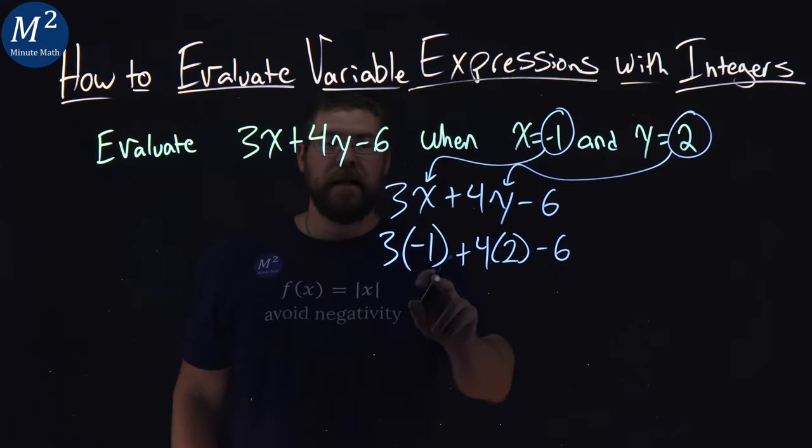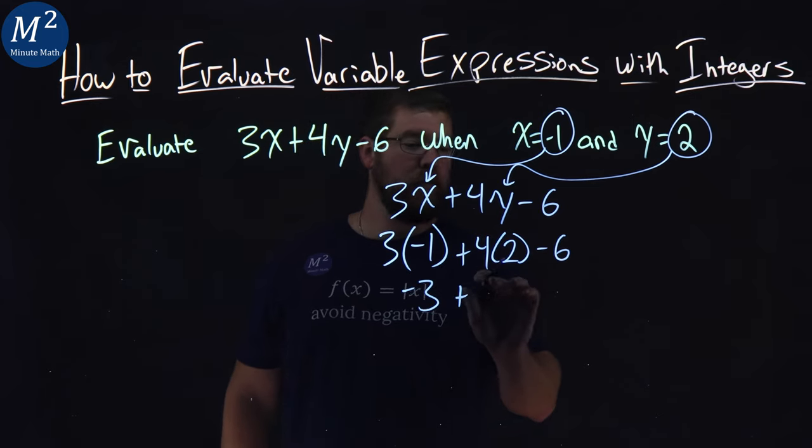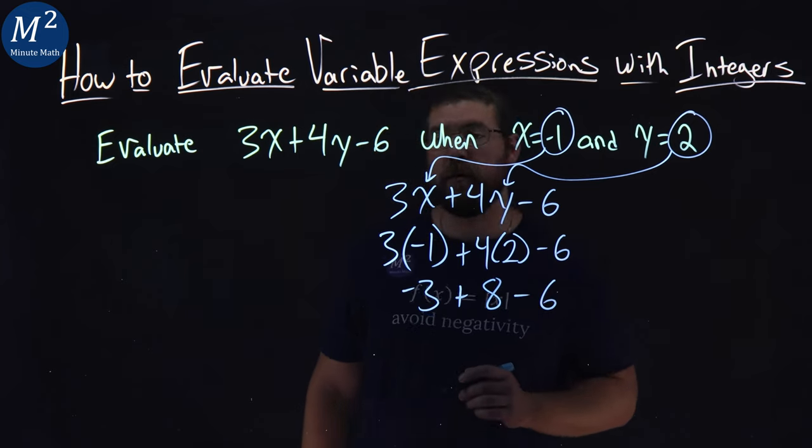3 times negative 1 is negative 3, pretty easy. Multiplication here, 4 times 2 is 8 minus 6.